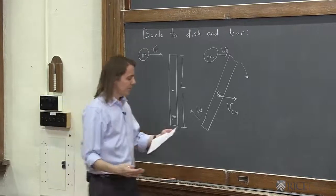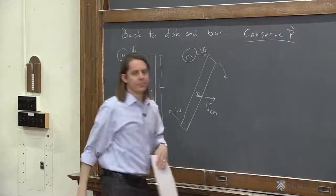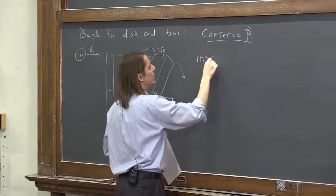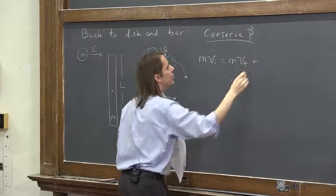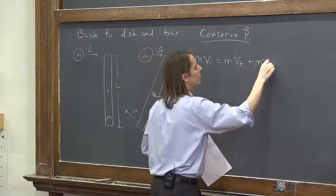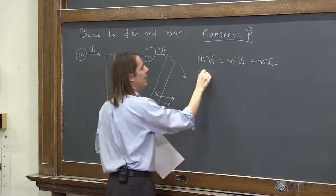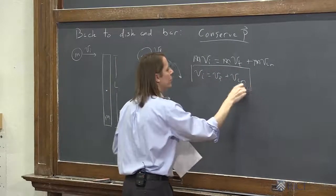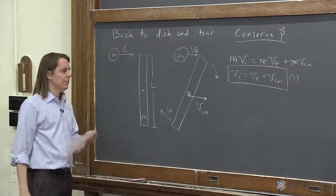Basically, we just apply conservation laws. We have to conserve the translational momentum. M Vi is the only translational momentum we had to start with. And in the end, we have M times Vf of the disc, plus M times Vcm. In our world of the same mass, the mass constantly cancels out. So we have Vi equals Vf plus Vcm. That will be one of our equations that we will label 1. Three unknowns, we probably need three equations. Let's keep going.